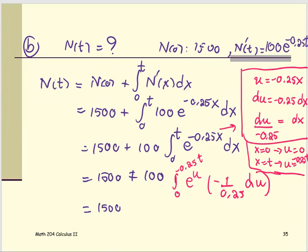Now work on the antiderivative: 1500, nothing to do with that. Negative 1 over 0.25, treat it as a multiple constant and bring it outside to join 100. So 100 divided by negative 0.25 gives you negative 400. Negative 400 integral from 0 to negative 0.25T: e to the u du.